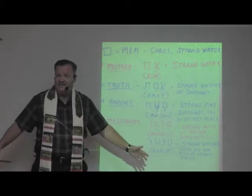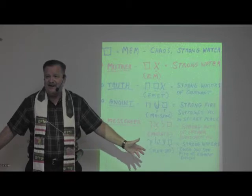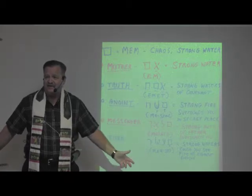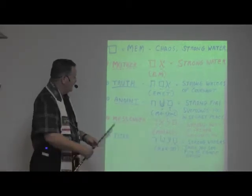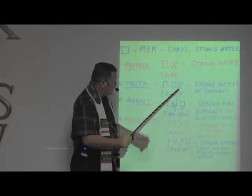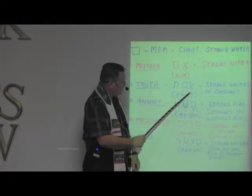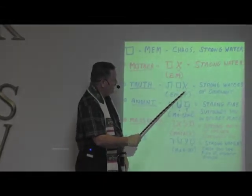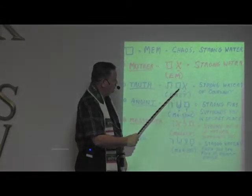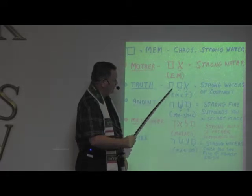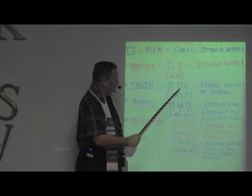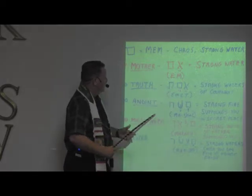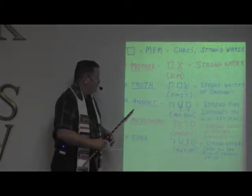Wouldn't we like to have truth look like that today in all the homes of America? This word is pronounced — we start with the E sound — emmet. The tov has a T sound, so emmet. That's truth: strong waters of the covenant.